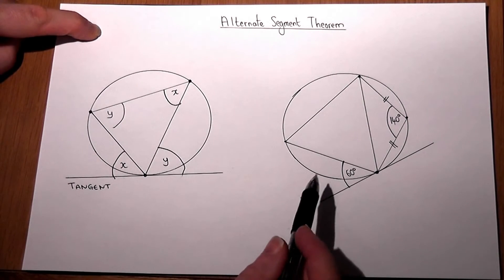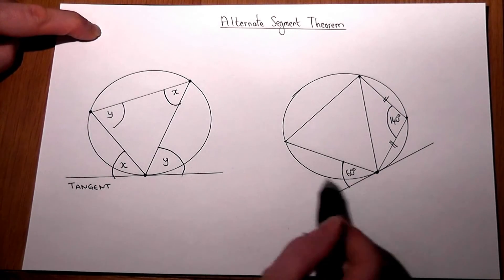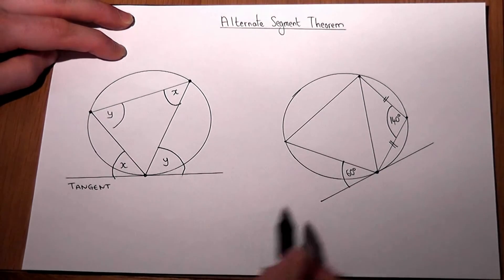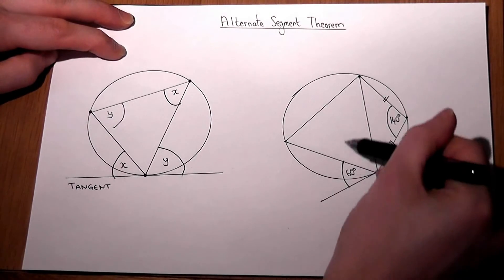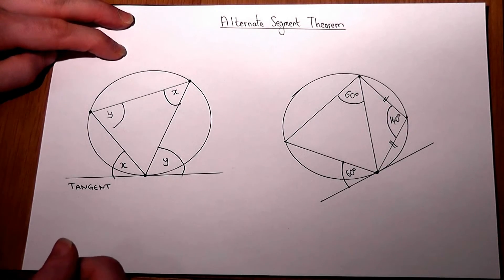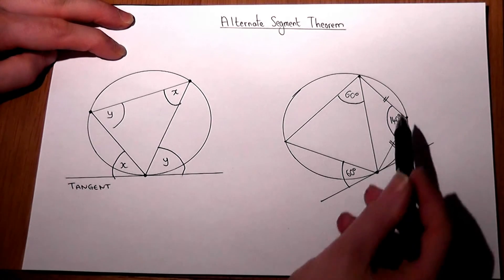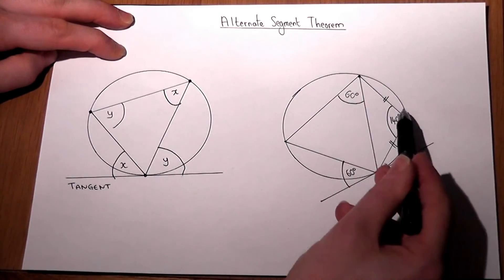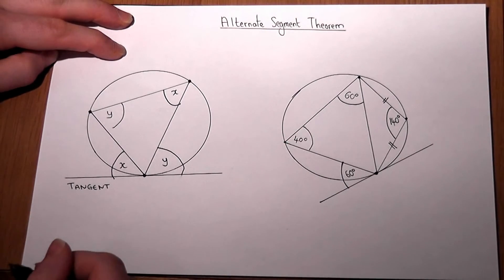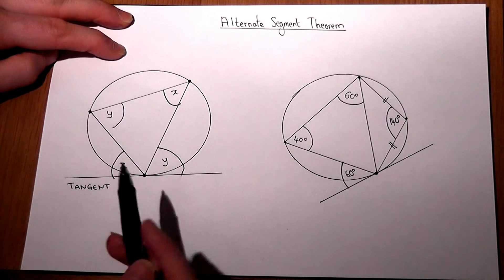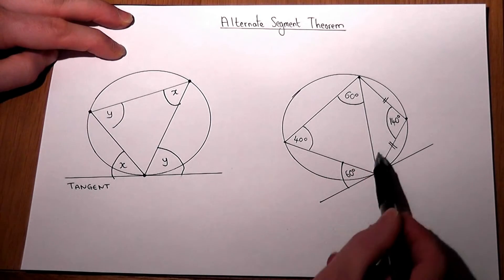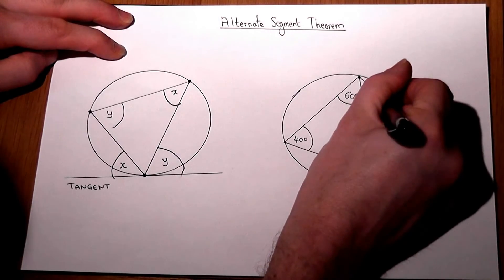This problem shows an application of that. The alternate segment theorem tells us that if this angle here is 60, then the angle opposite up here in this triangle must also be 60. We also know that if that's 140, then opposite angles in a cyclic quadrilateral add to 180, so this angle here must be 40. We can find more: that's 140, and these two lines are radii making an isosceles triangle, so those two angles are the same — meaning both must be 20, since 20 plus 20 plus 140 is 180.